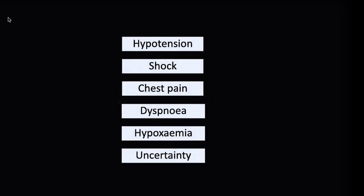When should we do POCUS or focused cardiac ultrasound? Really any cardiovascular or respiratory problem, because echo can discriminate between a heart problem and a lung problem. Any hypotension, shock, chest pain, dyspnea, or hypoxemia is a good indication. Any uncertainty at all — cardiac ultrasound usually gives us a lot more clarity, certainly better than a stethoscope alone.